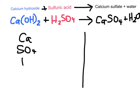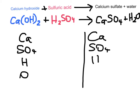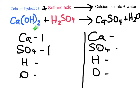Let's write out the elements on each side: calcium, sulfate, hydrogen, and oxygen. On the left side, we have one calcium and one sulfate group. For hydrogen, we've got two in H2SO4, and because OH is inside the brackets with a 2 outside, we have two more there as well — four hydrogens in total. For oxygen, we don't count the ones in sulfate; we just look at the two oxygens in the hydroxide groups — so two oxygens.